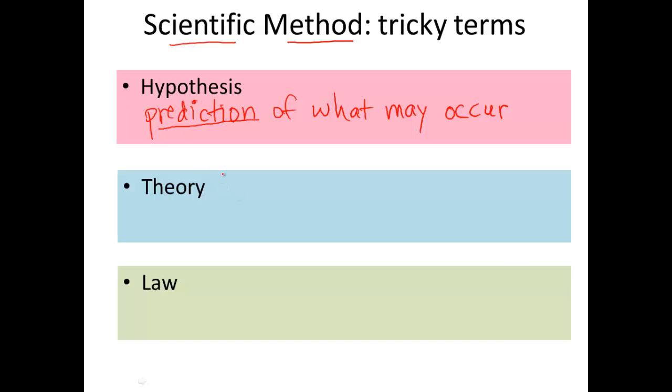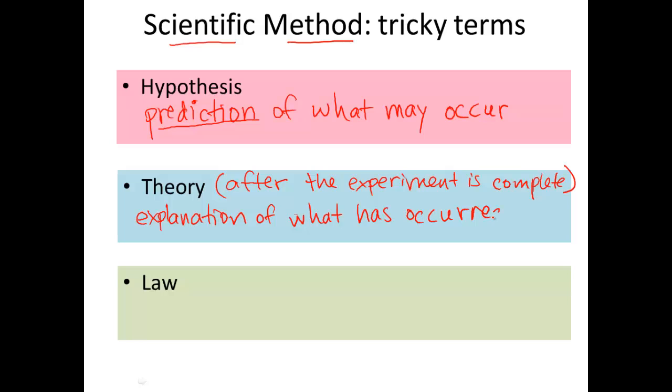A theory is not a prediction. This happens after the experiment is concluded. Okay, so the experiment is complete. And we're looking at all of our data and we're trying to summarize what we've learned. So this is an explanation of what has occurred. We would here try to explain why. Why is something happening?